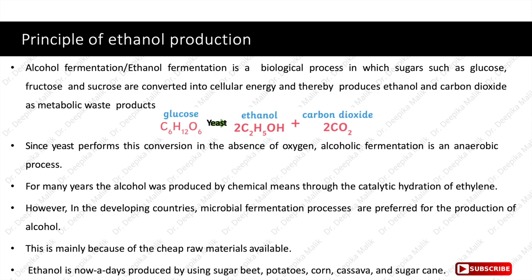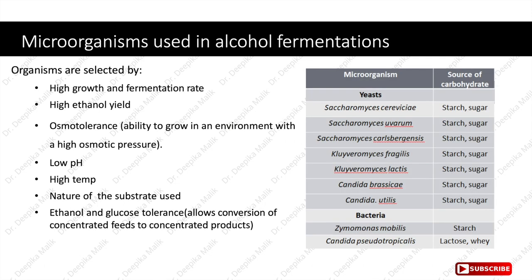Let us discuss the microorganisms used in alcohol fermentations. Organisms are selected based on the following parameters: the organism should have a high growth rate and fermentation rate, high ethanol yield production capacity, and high osmotolerance — the ability to grow in an environment with high osmotic pressure. The organism should also be able to withstand low pH and high temperature ranges. The selection also depends on the nature of the substrate used.